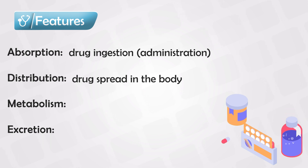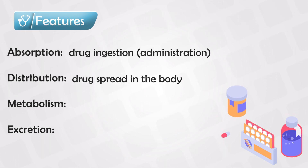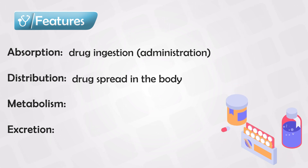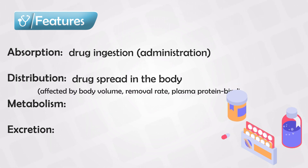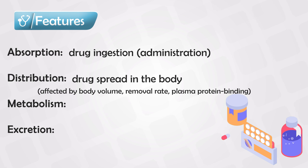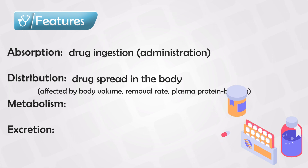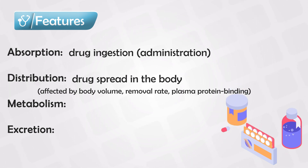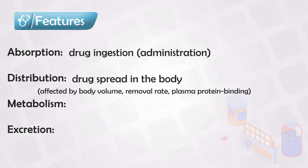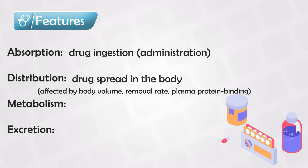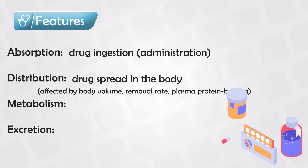Distribution studies how the drug spreads out in the body. So after the drug enters the systemic circulation, where does it go — into the muscles, or the fat, or everywhere? The key factors affecting distribution include the volume of the organism, the removal rate of the drug, and the plasma protein binding. If the drug enters the circulation and binds to plasma proteins, it will be ineffective.